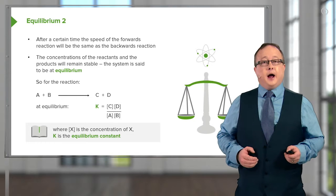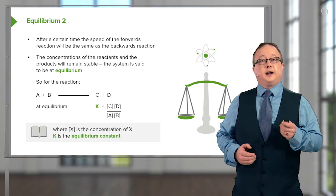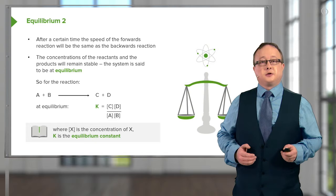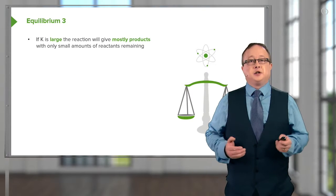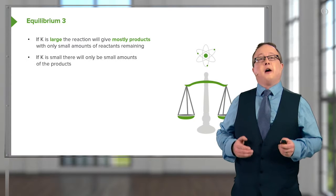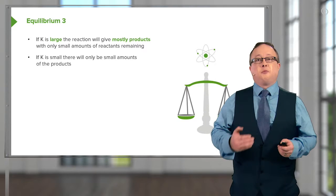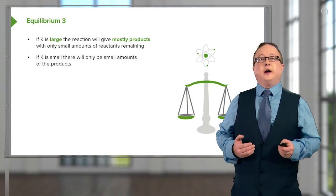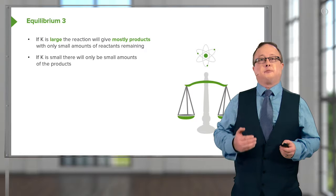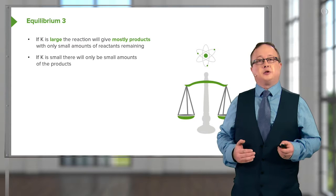So, here, as I've said, where X is the concentration of X, K is the equilibrium constant. If K is large, as you might expect, what this means is that the reaction will give mostly products, with only small amounts of reactants remaining. Because, effectively, K is just a ratio metric measure of how much product we get in comparison to how much reactant remains.